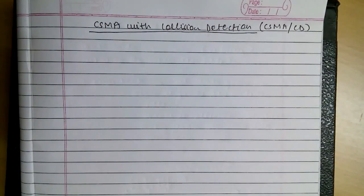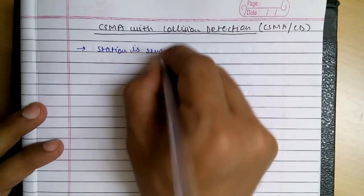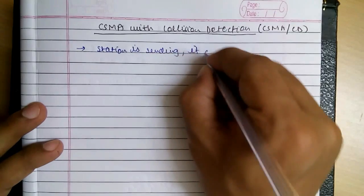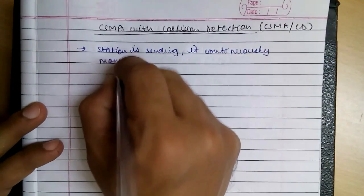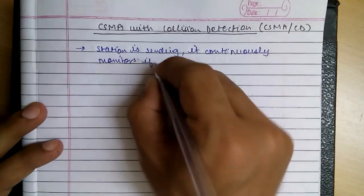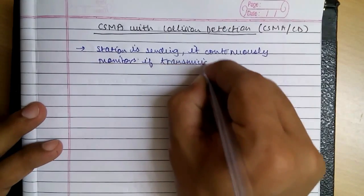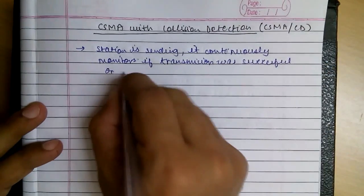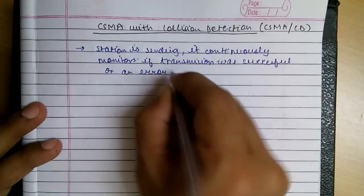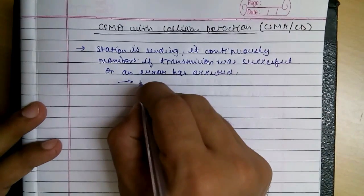So what happens in this Collision Detection protocol is that when a station is sending data, it continuously monitors if the transmission was successful or if there was an error. If there is an error, it resends the data.